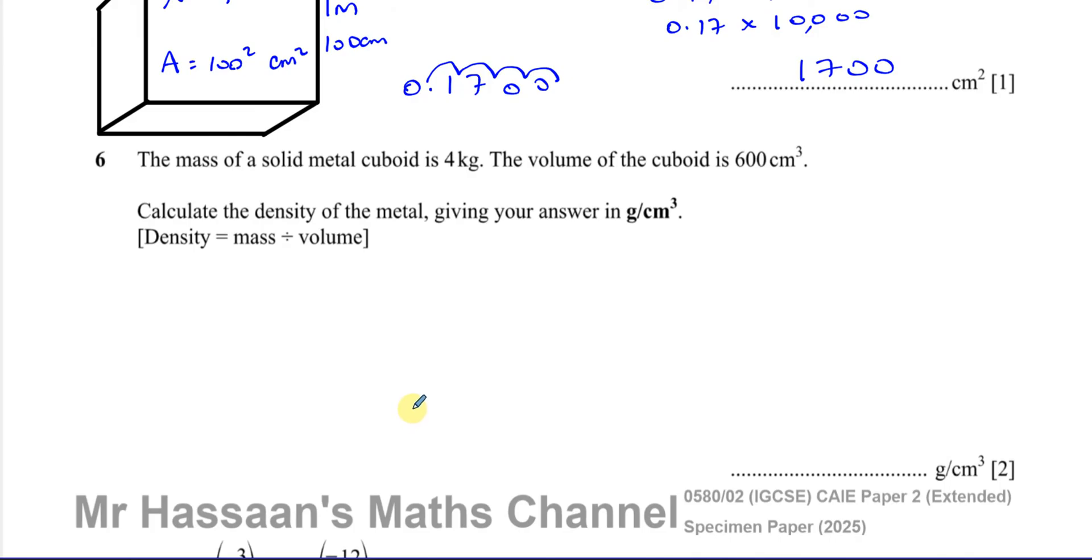So number 6 says, The mass of a solid metal cuboid is 4 kilograms. The volume of the cuboid is 600 centimeters cubed. Calculate the density of the metal, giving your answer in grams per centimeters cubed.